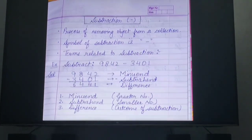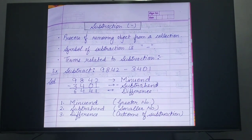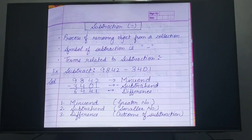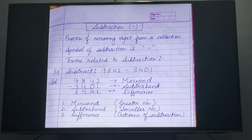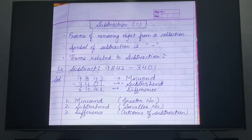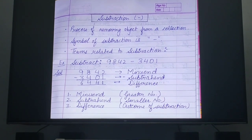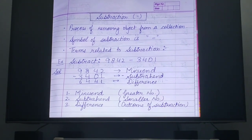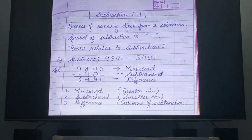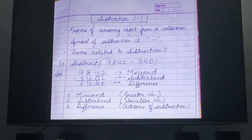So the terms related to subtraction are: first, minuend — the greater number; second, subtrahend — the smaller number; and third, difference — the outcome of the subtraction.